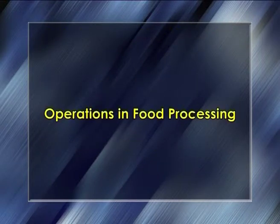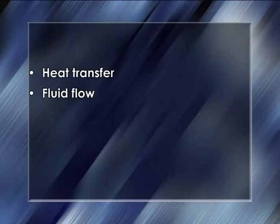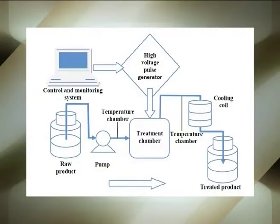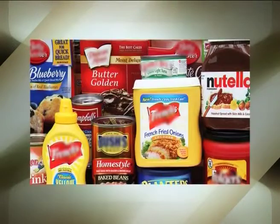Now let us learn about the operations in food processing. Most food processors utilize six different unit operations: heat transfer, fluid flow, mass transfer, mixing, size adjustment, and separation. During food processing, food materials may be combined with a variety of ingredients and then subjected to different unit operations either sequentially or simultaneously. Food processors often use process flow charts to visualize the sequence of operations needed to transform raw materials into the final processed product.